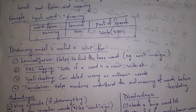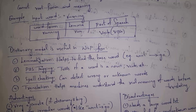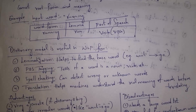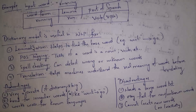We also use this model for POS tagging — parts of speech tagging — where the model identifies whether a word is a noun, pronoun, verb, etc. We also use it for spelling checking to identify wrong and unknown words, and for translation — converting one language to another — because this model understands the language perfectly using the dictionary. These are the uses of the dictionary-based morphological model.